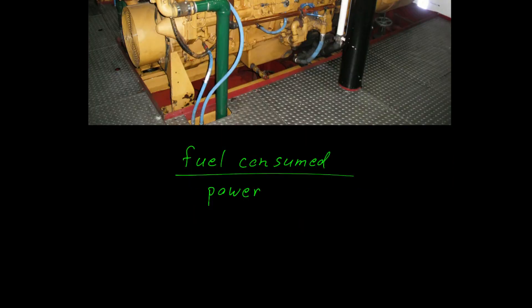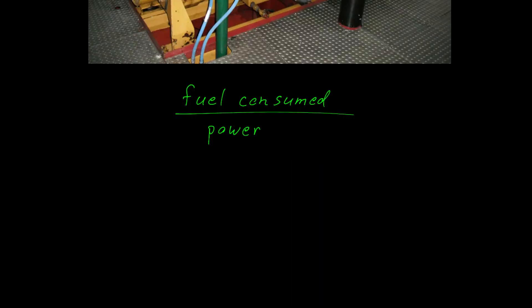As an example, let's consider a new Cat 3406, one that's rated at 400 kilowatts electrical. When it has 100% load on it, we can expect that it will consume 29.2 gallons per hour.